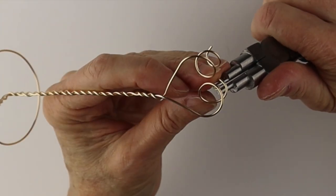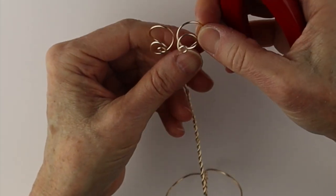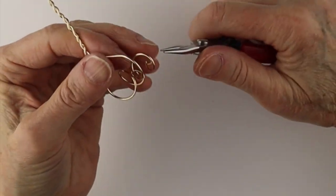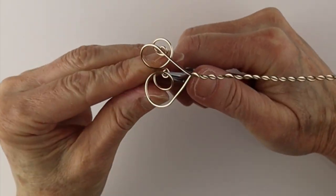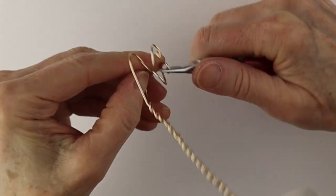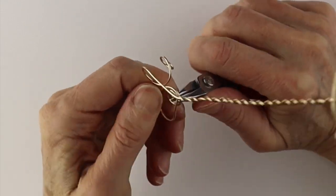Just use the end of your looping pliers. I'm using the smallest one. Bring in the loop. And then we're going to get our smaller pliers just to get in there and wiggle it around to push the spirals together.